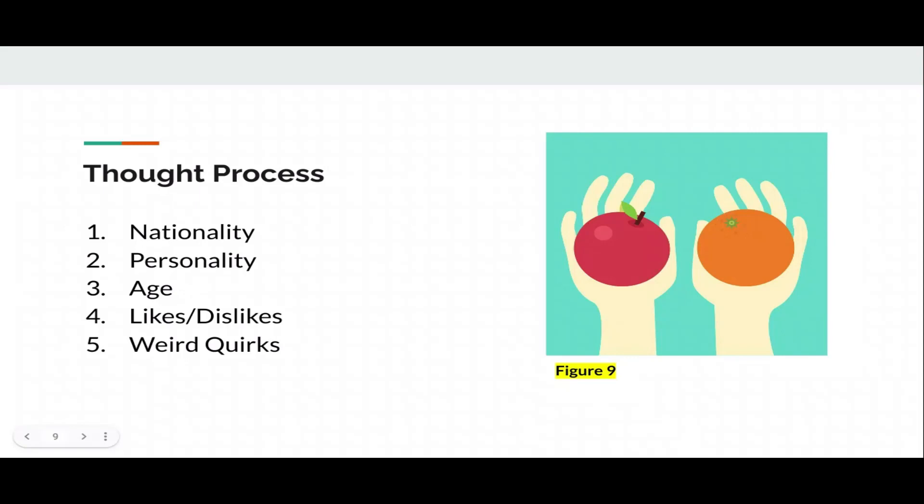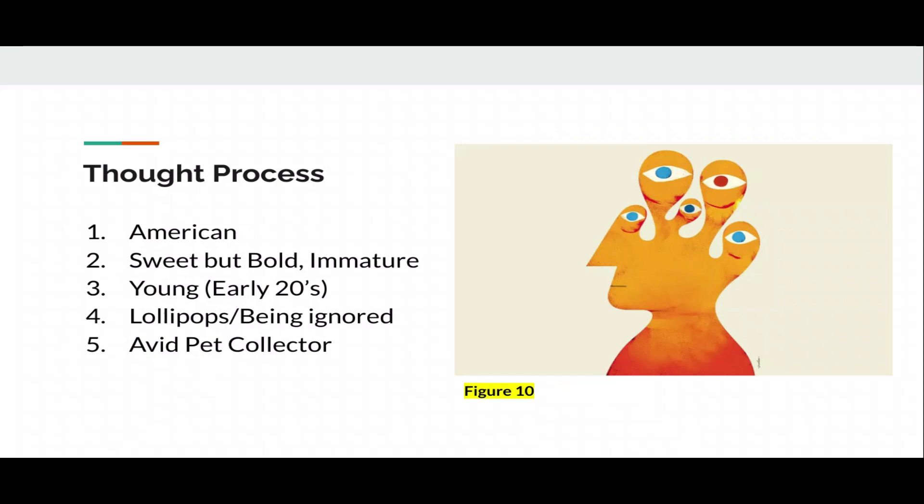Then likes, dislikes. I feel like this is self-explanatory. All of us have something we really like. Some of the stuff that we dislike. That plays into personality a lot. They can go hand-in-hand. Then weird quirks. Like as you know in anime, like My Hero Academia. When you read the manga, they do these things where they put side information. Like random stuff. Like those reference things he does.